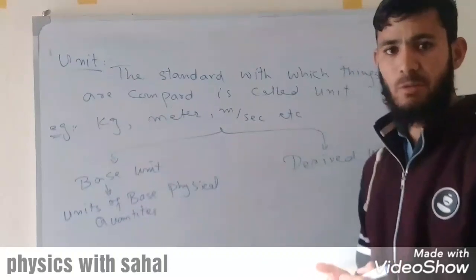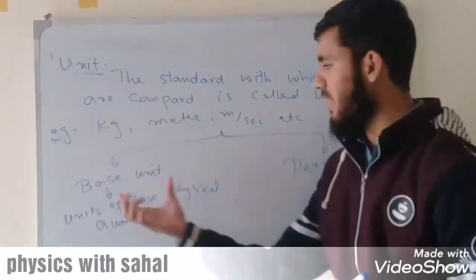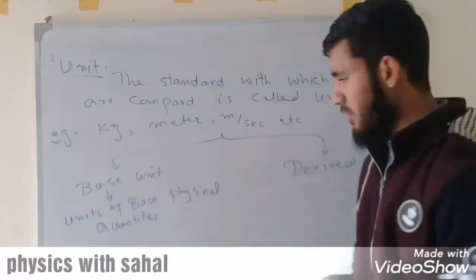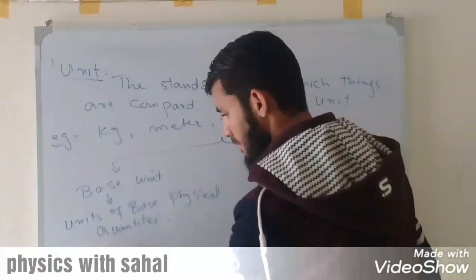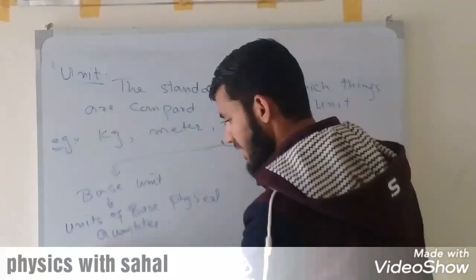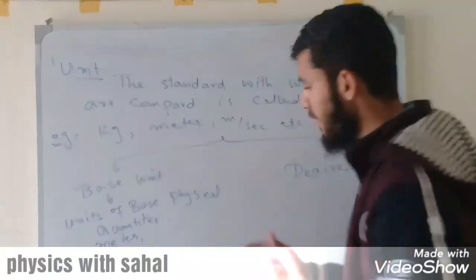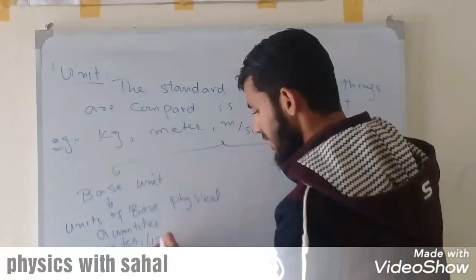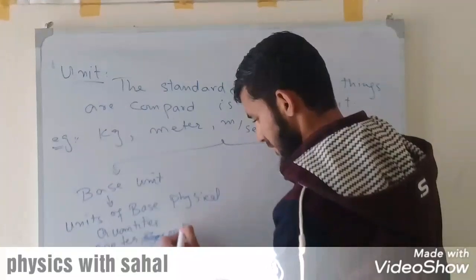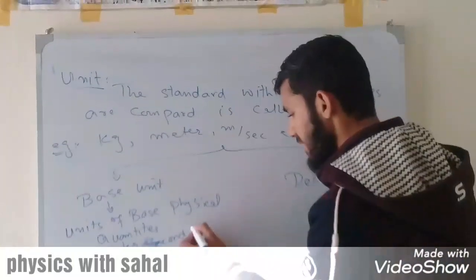As we have seven base physical quantities, the units of these base physical quantities are called base units. We have mass, so the unit of mass is kilogram. We have length, so the unit of length is meter. We have time, so the unit of time is second. We have temperature, so the unit of temperature is Kelvin.